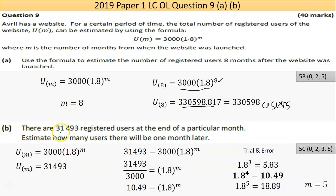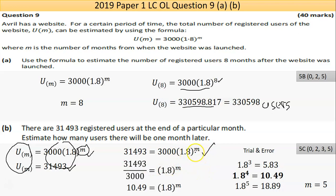Part B: there are 31,493 registered users at the end of a particular month - estimate how many users there will be one month later. I have the formula, I have the number of users. Setting the formula equal to 31,493 and working down algebraically - bringing 3,000 across, so multiplying on the right becomes dividing on the left - I do that division and end up with 10.49 equals 1.8 to the power of M.